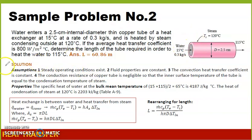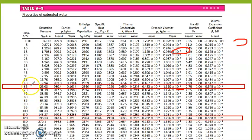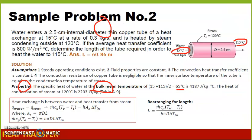Those are our assumptions to simplify our solution. The properties are evaluated at the bulk mean temperature — the average of the inlet and outlet water temperatures, which is (15 + 115) / 2 = 65 degrees Celsius. Finding CP at that temperature using the table, at 65 degrees Celsius our CP is 4187 joules per kilogram degree Celsius.